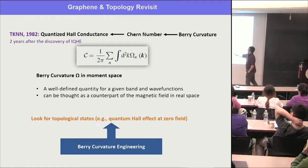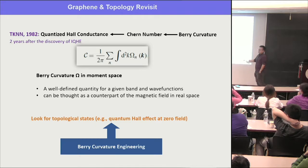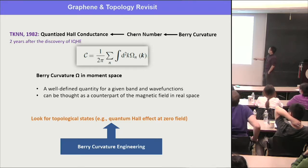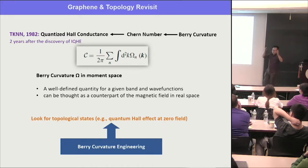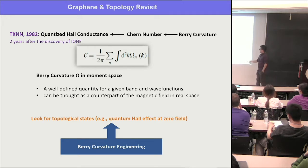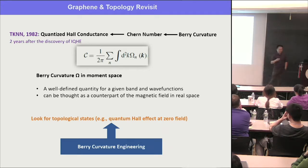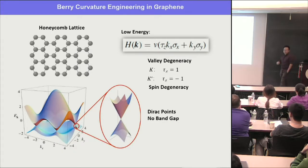This remarkable insight tells us that if you want to look for a new topological state — for example, quantum Hall effect at zero field — you don't need to focus on the magnetic field; just focus on the Berry curvature. In a given band in a normal crystal you have Bloch bands. What you really need to do is Berry curvature engineering: find a special kind of Berry curvature and realize a non-zero Chern number.